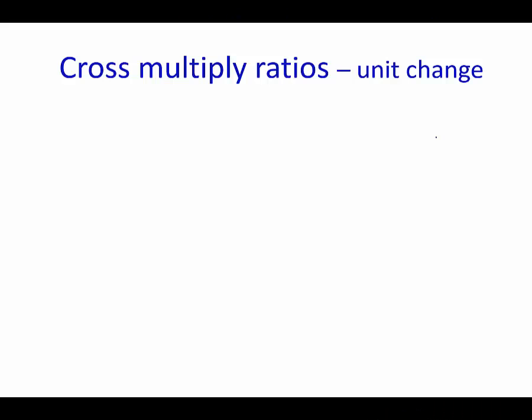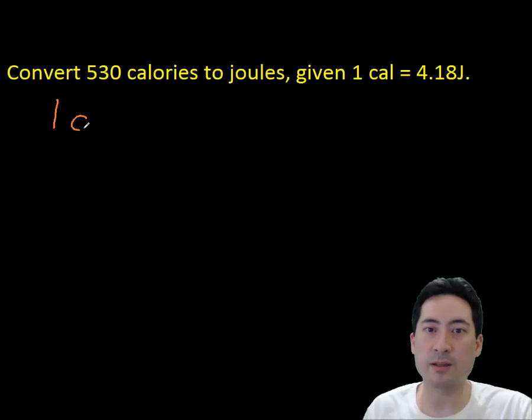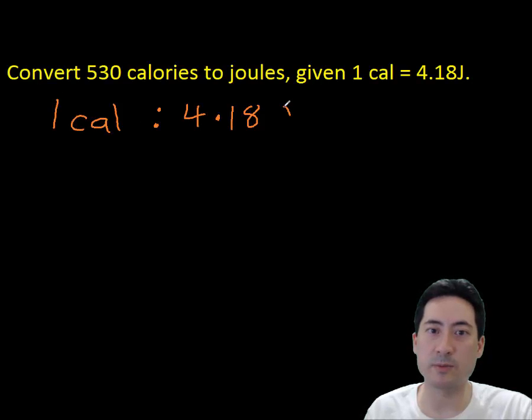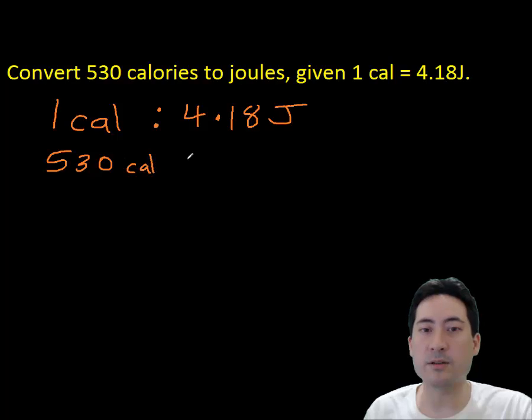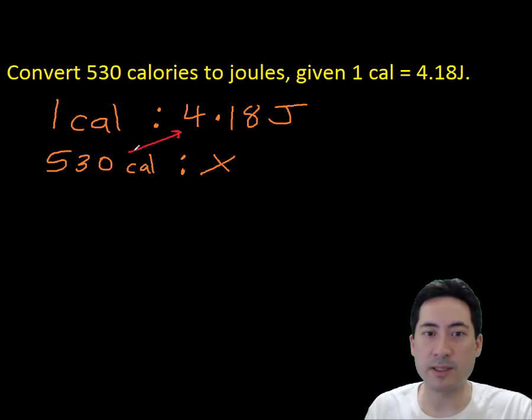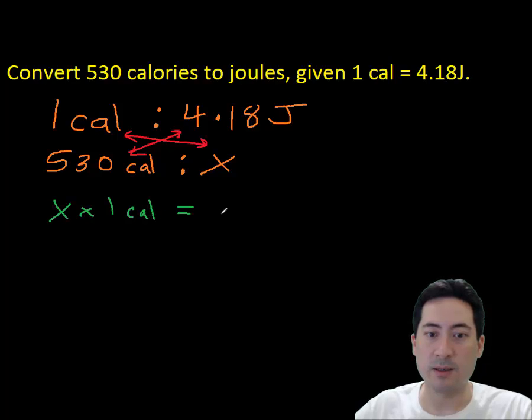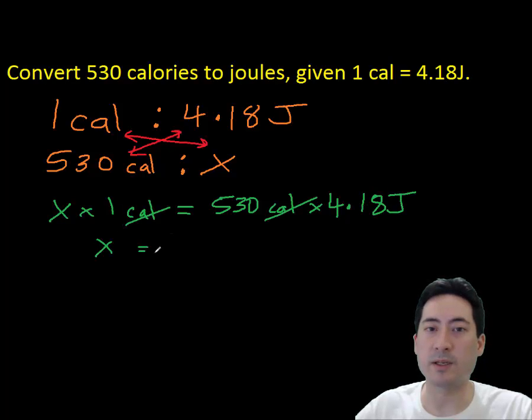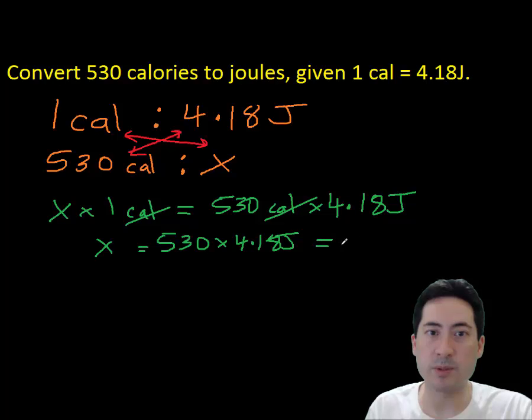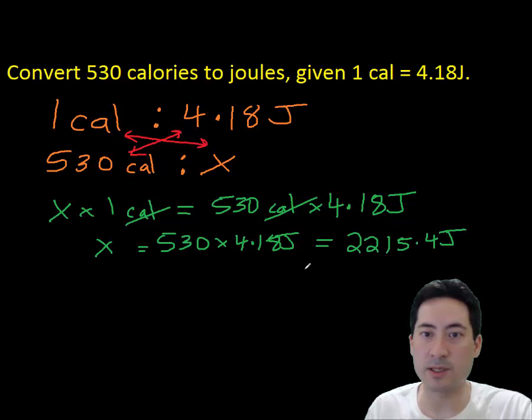Now we're going to convert between units. Convert 530 calories to joules, given 1 calorie equals 4.18 joules. So again, you can do the ratio thing there, and so you've got the x that allows you to cross multiply. Once you times that out, you end up with 2,215 joules. In this particular case, we've rounded off to the most number of sig figs, which probably should be 1 because there's only 1 calorie, so it should actually be 2,000. We won't worry about sig figs until we do unit 11.